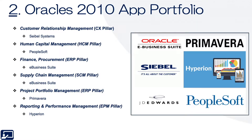Second topic: Oracle's 2010 application portfolio. As of 2010, Oracle had built the following best-of-breed app portfolio: Siebel for CRM, PeopleSoft for HCM, a business suite for finance, procurement, and supply chain management, Primavera for project portfolio management, and Hyperion for reporting.